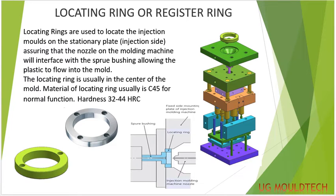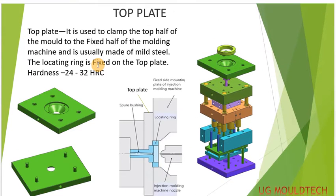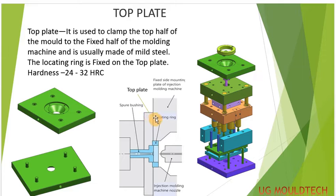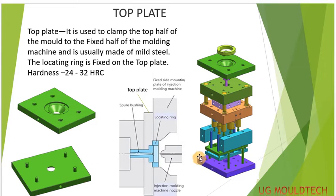Next we move on to the top plate. As the name suggests, it is at the top of the mold, which is used to align with the machine. This top plate is fixed with the injection molding machine. The top plate is used to clamp the top half of the mold to the fixed half of the mold. This is the fixed half — it is stationary. The other half is the moveable — from core to the back plate.